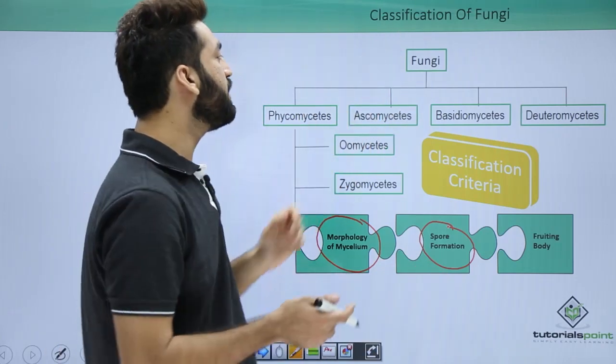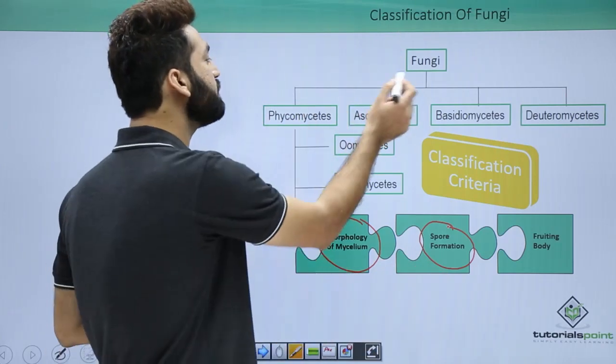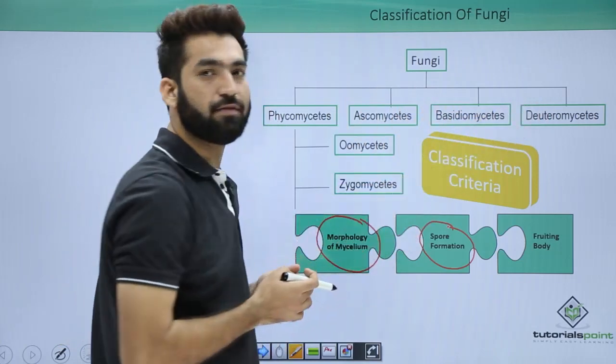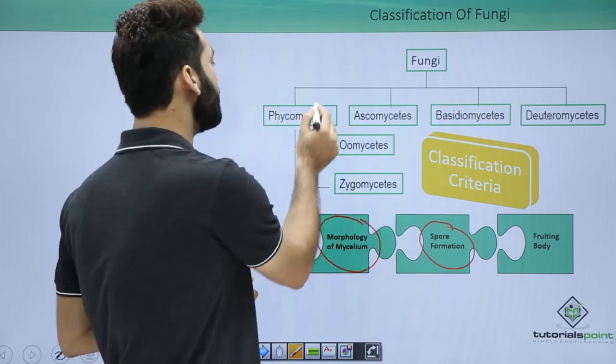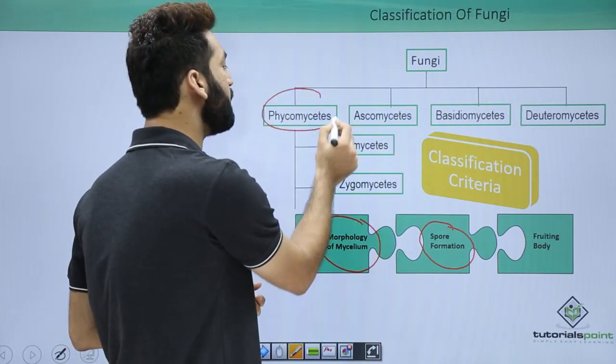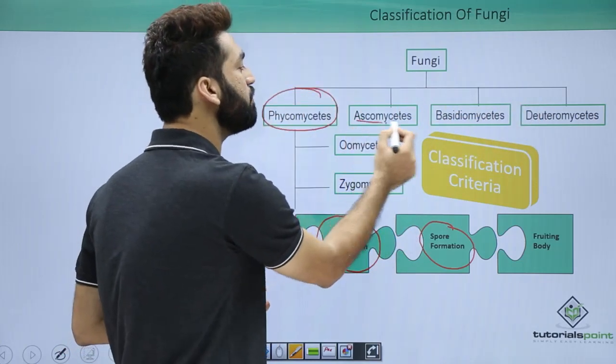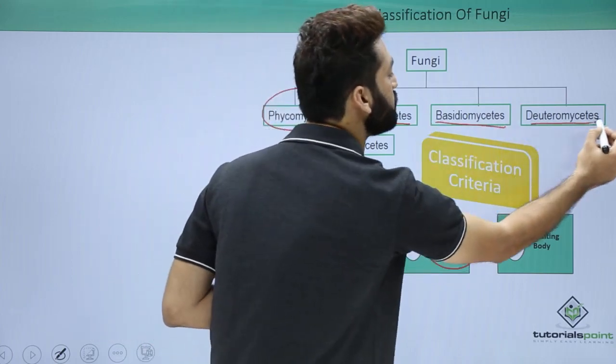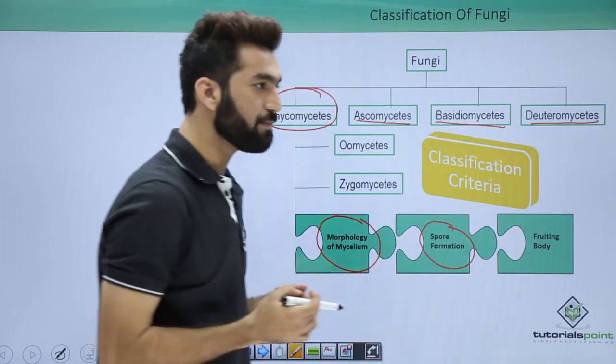Now when you talk about fungus, we'll have these four — basically the four classes of fungus. The first one is phycomycetes, ascomycetes, basidiomycetes, and deuteromycetes.